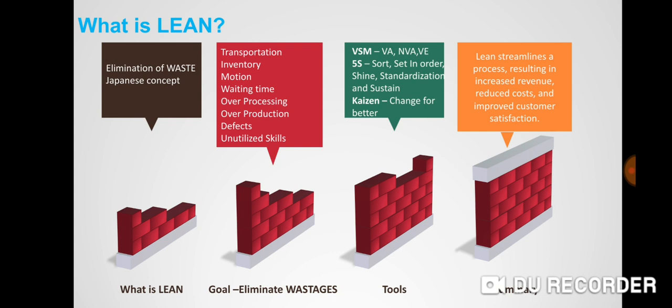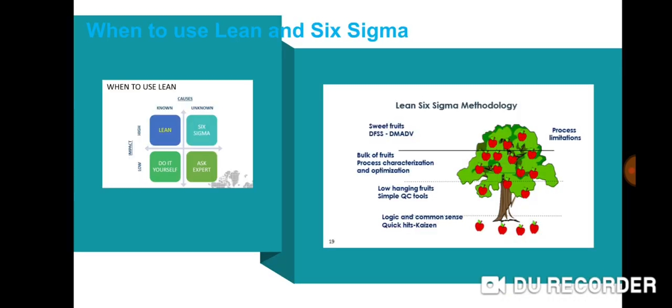Kaizen is K meaning Change, Zen for Better. That means anything which we have—a problem, business problem—that we can bring the solution, that is called Kaizen. So in a nutshell, Lean focuses on streamlining the processes by eliminating the waste stages. So anything which is a quick fix, we can very well use Lean concept.